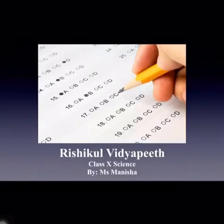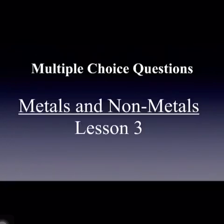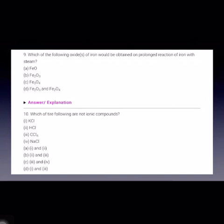Good morning students. In our previous video we were discussing the MCQs of lesson number three, that is metals and nonmetals, so we are going to continue with the same. Now see the next question, which is: which of the following oxide of iron would be obtained on prolonged reaction of iron with steam?